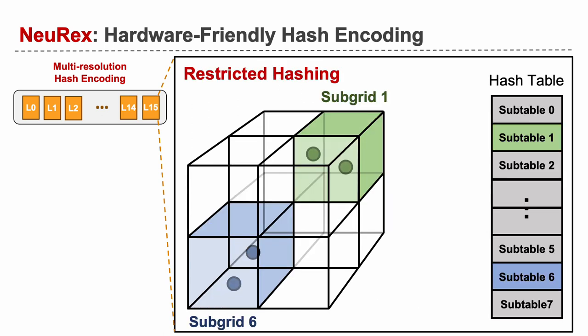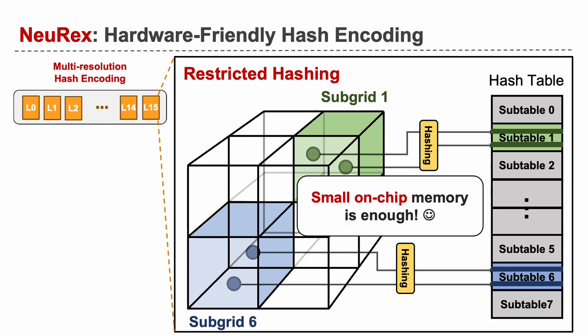To address this, we propose restricted hashing, where the 3D space is divided into small sub-grids and the points are constrained to access their own sub-tables. In this way, small on-chip memory is enough to encode the points.